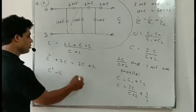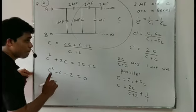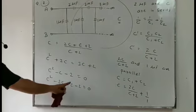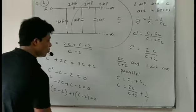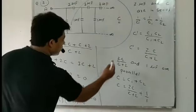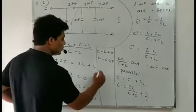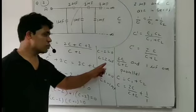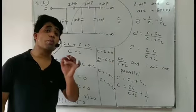Transferring terms: C² − 3C − 2 = 0. Factoring: (C − 2)(C + 1) = 0. So either C − 2 = 0, giving C = 2 microfarad, or C + 1 = 0, giving C = −1 microfarad. Capacitance cannot be negative, so we take the positive value. The total equivalent capacitance of this infinite circuit is 2 microfarad.